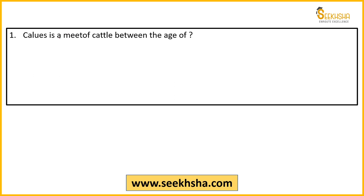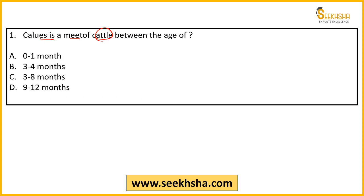The first question is about Calus — this is cattle meat basically. Between what age do we call it Calus? I have asked you in lecture number 11 as well. So Calus is meat of cattle between the age of: A) 0 to 1 months, B) 3 to 4 months, C) 3 to 8 months, D) 9 to 12 months, or E) none of the above.